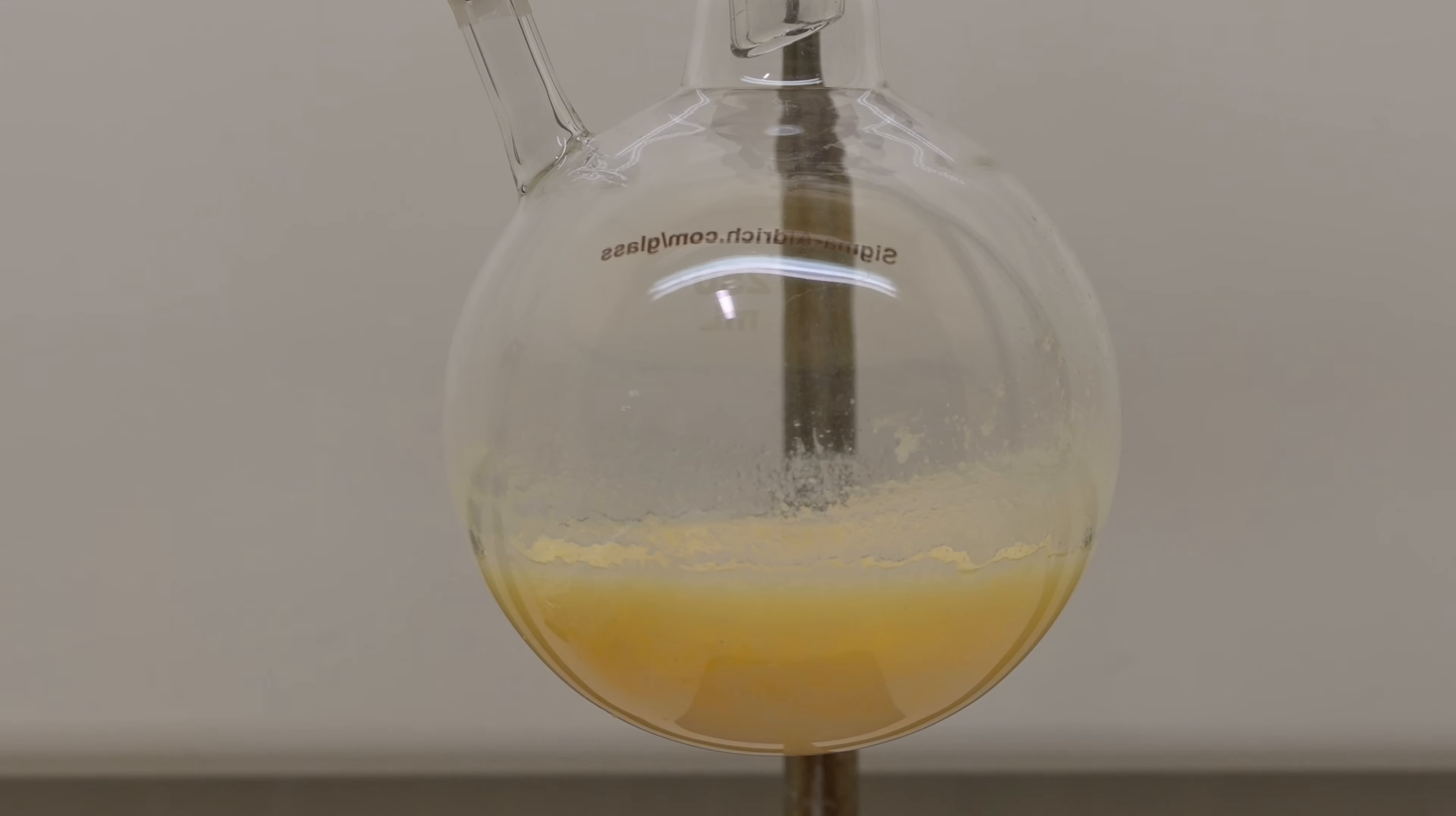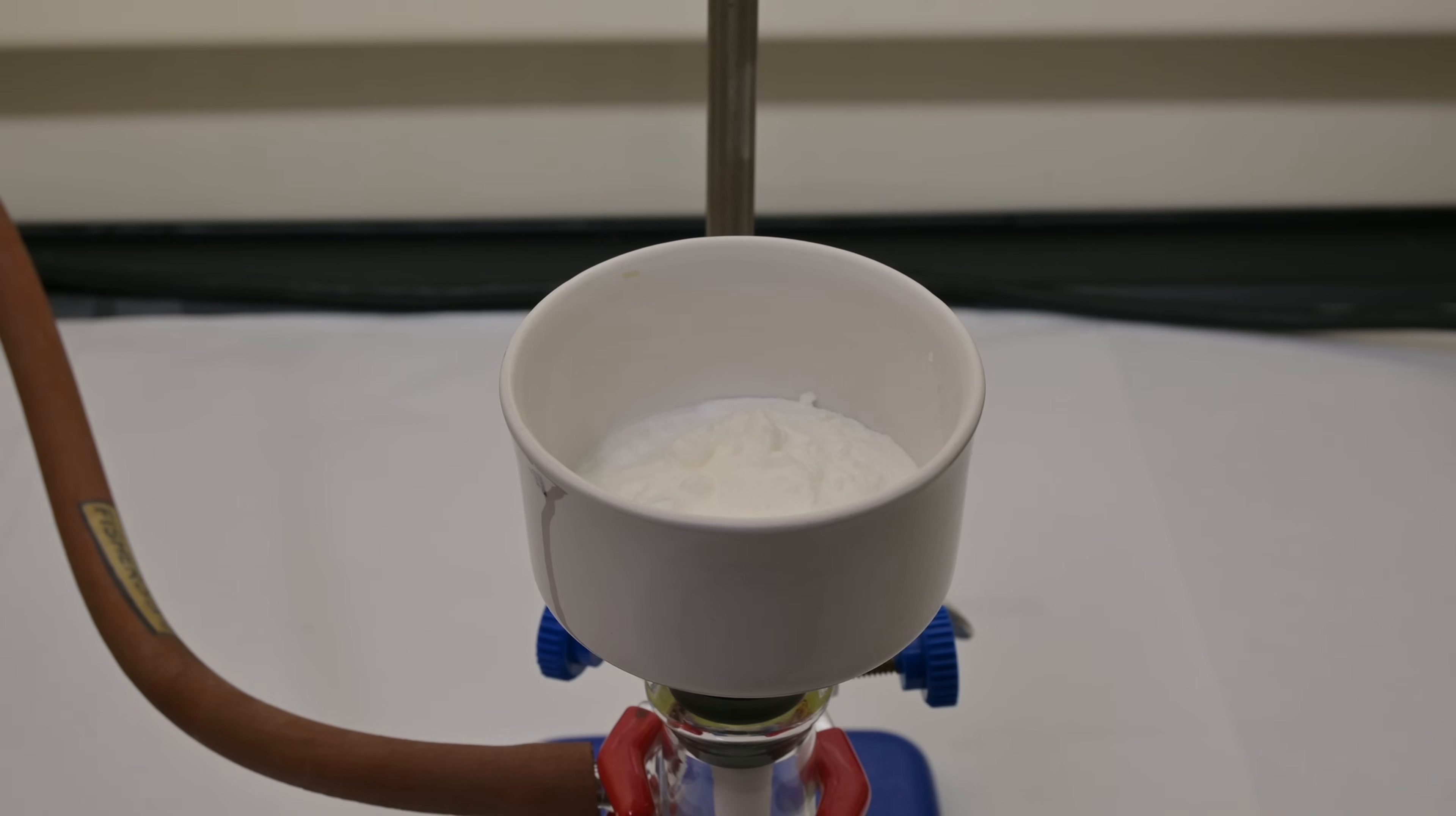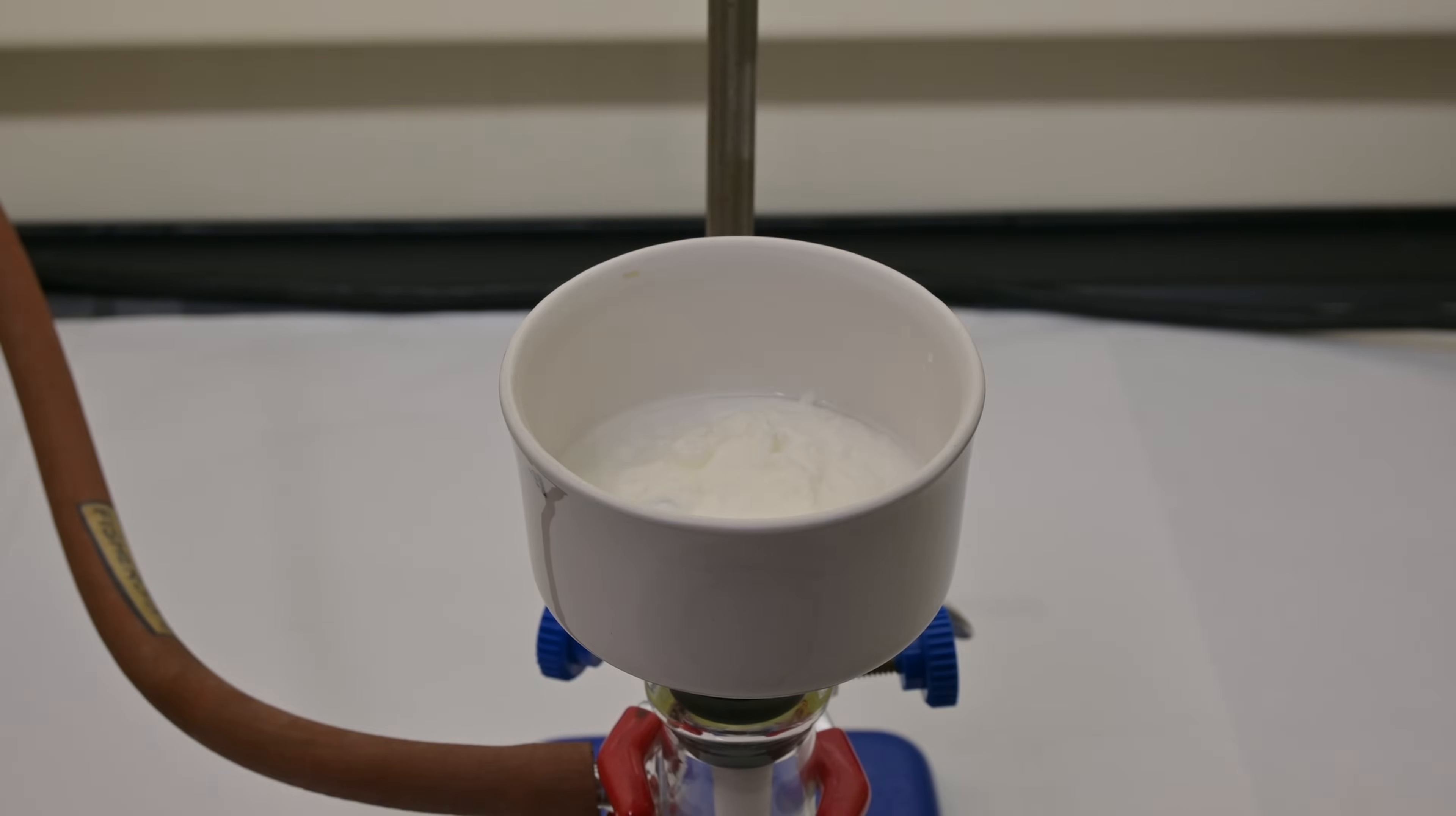Once the product has fully crystallized, we collect it using suction filtration. We wash the crystals thoroughly with two 15ml portions of 50% ethanol solution and several washings of water, to ensure that any impurities such as unreacted benzaldehyde or leftover thiamine are removed. Finally, we let them filter to remove as much moisture as possible, and then spread them out in the air to dry.